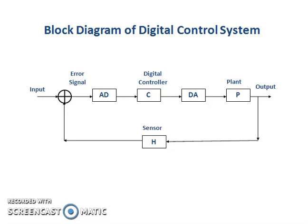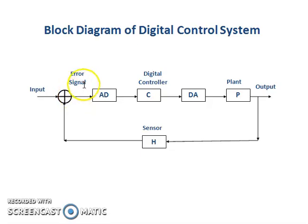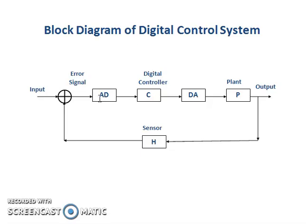Here is the block diagram for the digital control system. We have our plant, which produces an output — the system response — which is measured with a sensor. The measured output is then compared with a comparator against our reference input to produce an error signal. The error signal is a measure of the deviation of the output from the reference input, and it is in analog form.